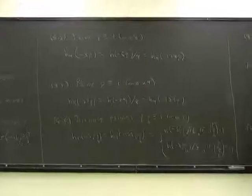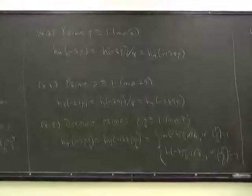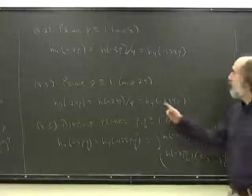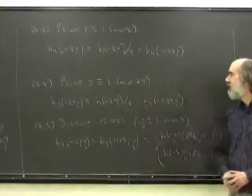So here are three of the conjectures. The labeling, 8.2, 8.3, comes from Sun's paper.